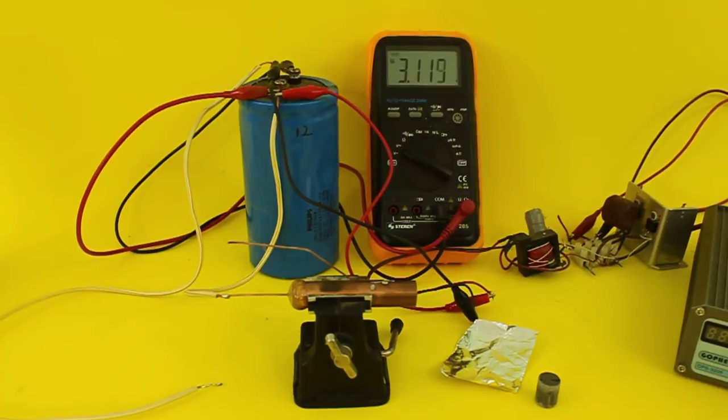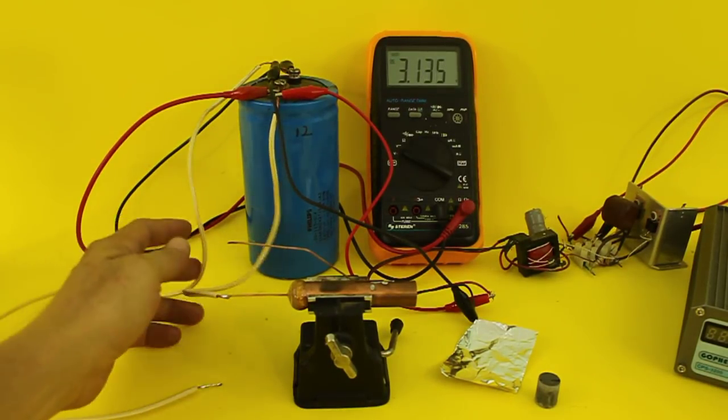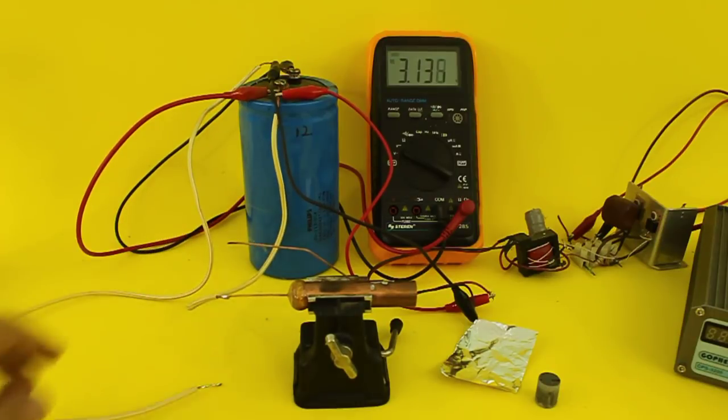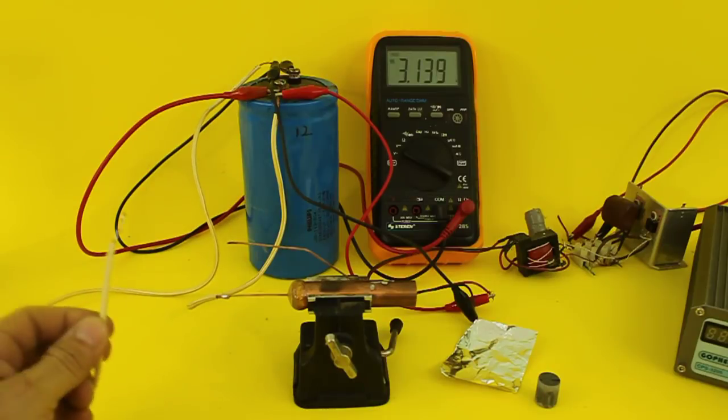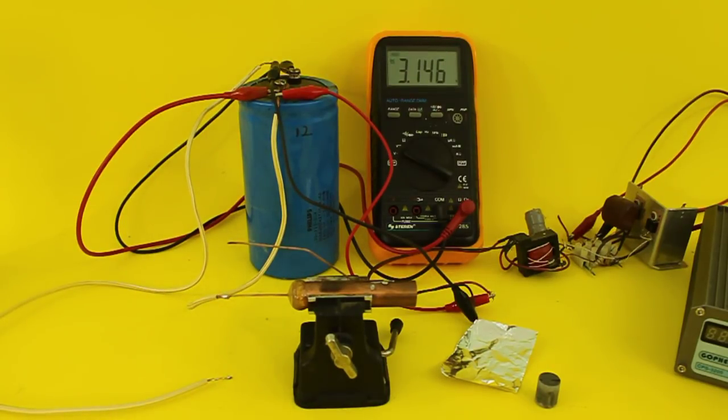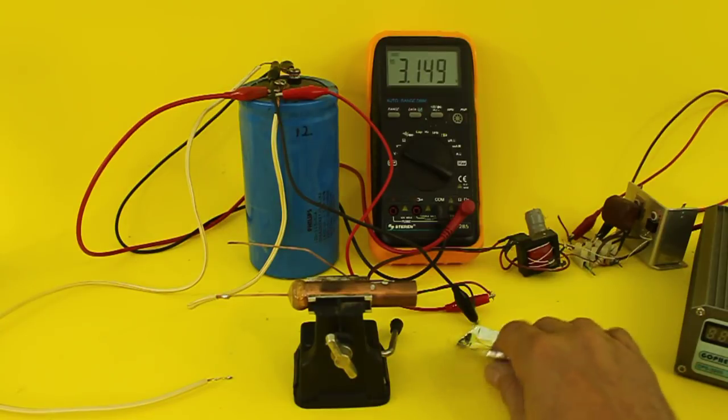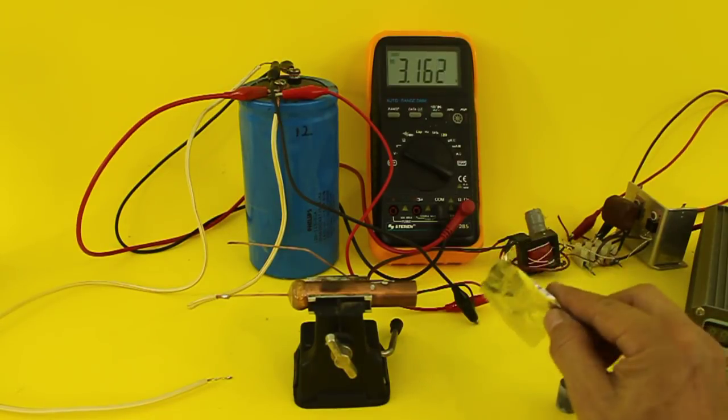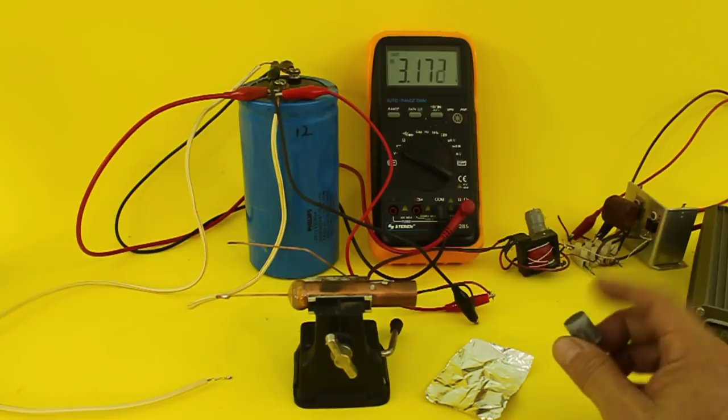We are almost ready to make the test. Everything is connected. These white wires come from the capacitor. One is connected to one of the electrodes and with the other we will make contact with the other electrode. And we have a piece of aluminum foil to load the cannon and the projectile.